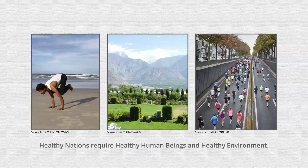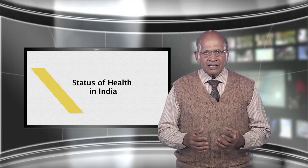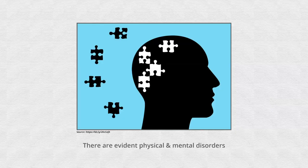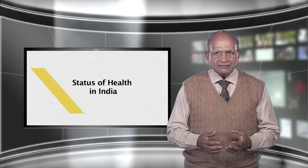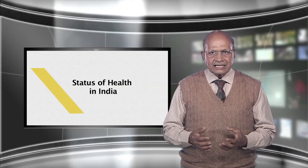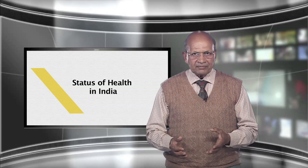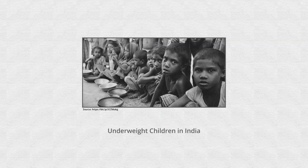Status of health in India. Healthy nations require healthy human beings and healthy environs. Fully healthy human beings in the 21st century are a figment of imagination. There are evident physical and mental disorders. There is degeneration of environs. The ultra-modern society has invited many imbalances. There is an alarming number of underweight children in India.